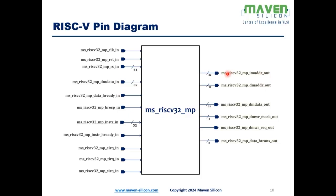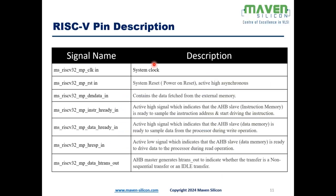On the output side, IM_ADDR_OUT is a 32-bit bus from the program counter carrying the address of the next instruction to be fetched, connecting to the instruction memory. DM_ADDR_OUT is the address bus connecting to the data memory for read or write operations. DM_DATA_OUT is the data bus through which the processor writes data to external data memory. We also have DM_WRITE_MASK_OUT for masking, DM_WRITE_REQUEST_OUT for write operations, and DATA_HTRANS_OUT — a 2-bit AHB signal.